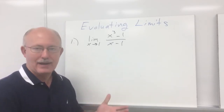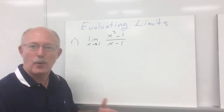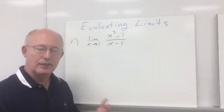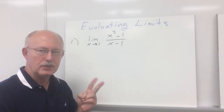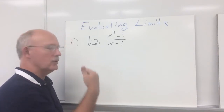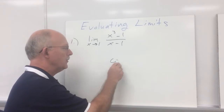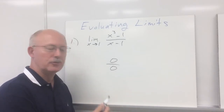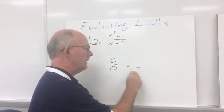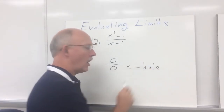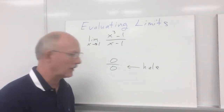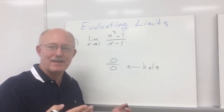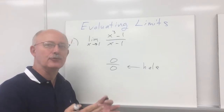When you're evaluating a limit analytically, you always try direct substitution first. Now, if direct substitution doesn't work, there are usually two things that will happen. If you end up with zero over zero, remember division by zero is not defined. Typically, this indicates a hole in your graph. Holes we can get rid of — we can remove them by factoring and canceling.